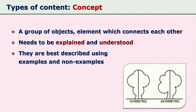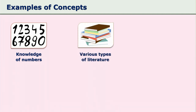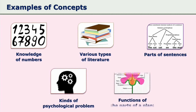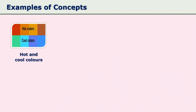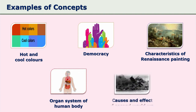Concepts need to be described using examples and non-examples, explained by the teacher, and understood by the learner. Examples of concepts include: knowledge of whole numbers, integers, and fractions under rational numbers; types of literature; parts of sentences; kinds of psychological problems; functions of plant parts; hot and cool colors; democracy; characteristics of Renaissance paintings; organ systems; and causes and effects of World War II.